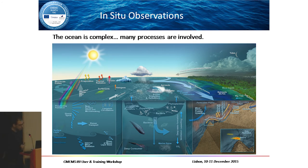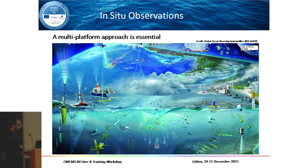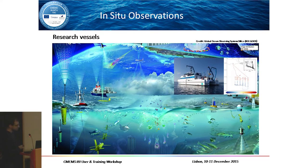With this picture, I want to reveal the complexity of the ocean. There are a lot of processes involved — boundary currents, tides, precipitation, atmospheric inputs, river inputs, thermal radiation — that are altering water conditions all the time. As a consequence of this complexity, we have to use a multiplatform approach. We have research vessels measuring salinity, chlorophyll, and many other parameters, determining fixed routes for CTD profiles.